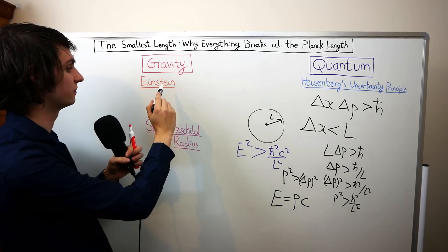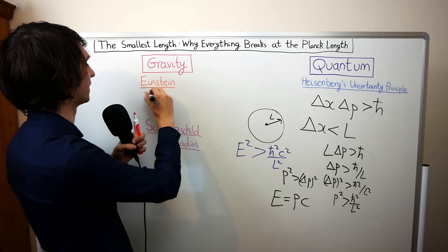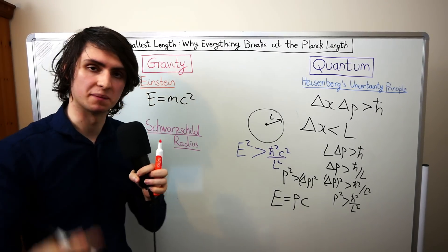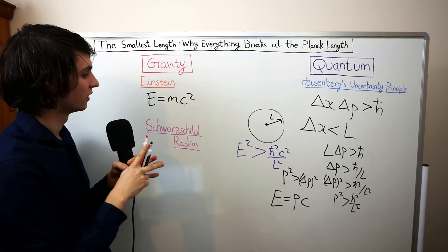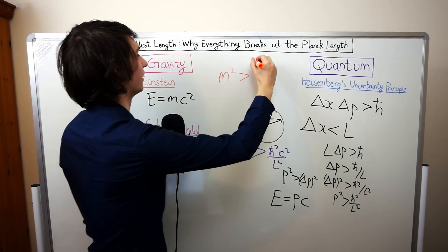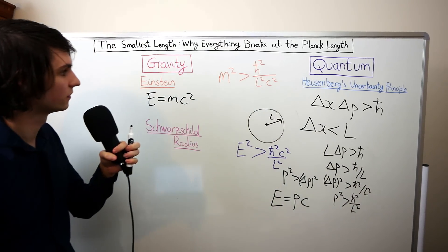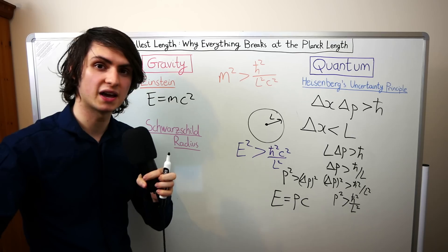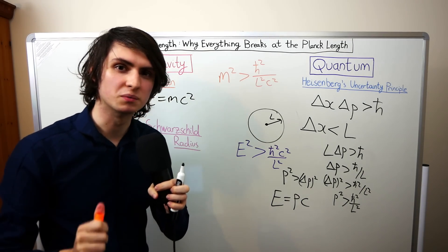Now let's combine it with some relativity. It turns out all we need is Einstein's very famous formula E equals mc squared. This tells us that any energy behaves like a gravitating mass. So we can replace the energy in this inequality here with mass. This gives us that the mass squared has got to be larger than h bar squared over L squared c squared. This tells us then that if we want to probe very small length scales then our particle is going to behave as if it has a very large gravitating mass. This is where problems are going to emerge.